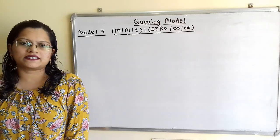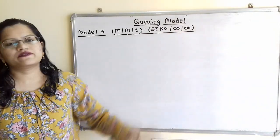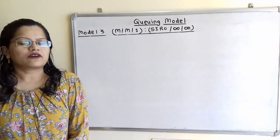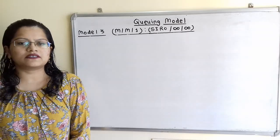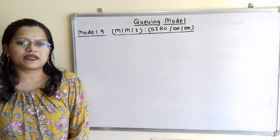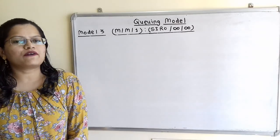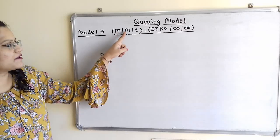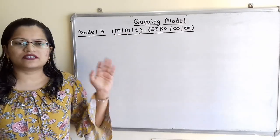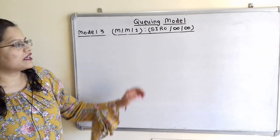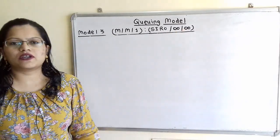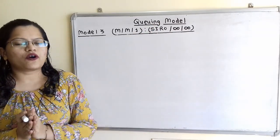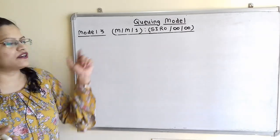Model 3 is symbolically represented as M/M/1/SIRO/∞/∞. The service discipline here is service-in-random-order. This service discipline does not affect other parameters — that is, queue length, system length, waiting time in queue, or waiting time in system. So we use the same formulae as in Model 1, since the arrival rate, service rate (Poisson distribution), single server, and infinite customers/population are all the same. Only the service discipline differs, and it does not affect the other parameters.